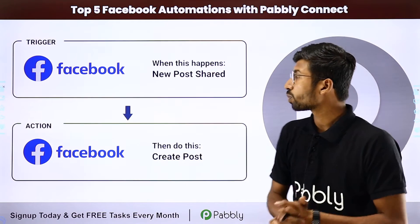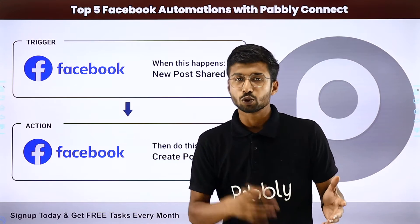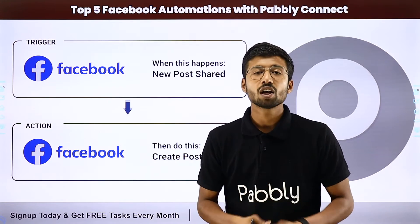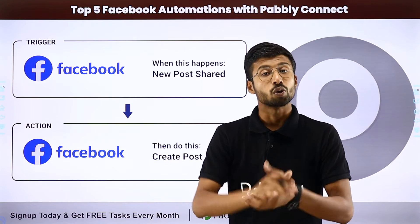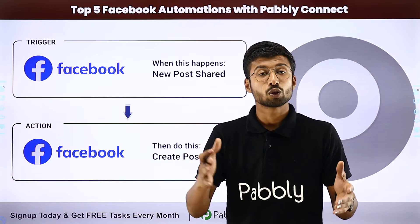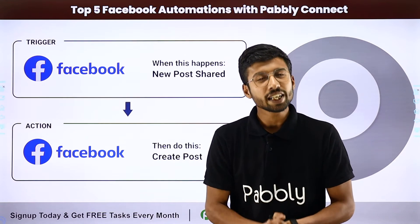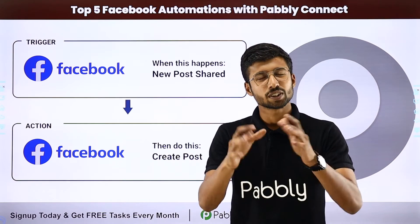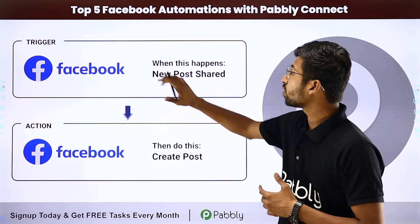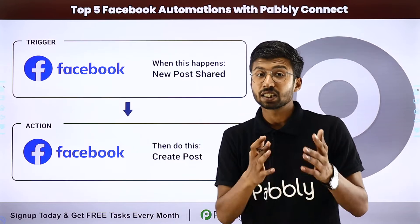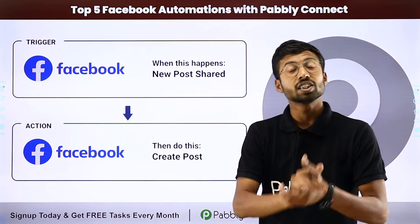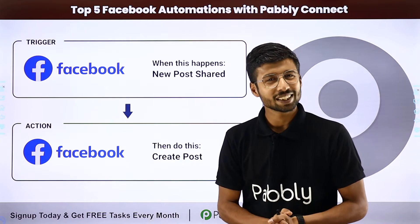Our first automation is sharing your Facebook page post to a Facebook group. Suppose I'm a business owner with multiple Facebook pages and Facebook groups, and I need to share the same post across all of them. Using Pabbly Connect, I can completely automate this process — whenever a new post is shared on one Facebook page or group, the same post is automatically shared to the rest as well.